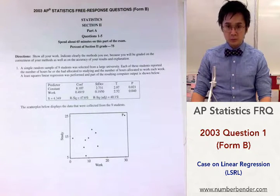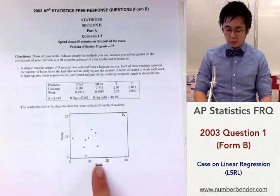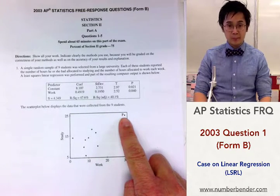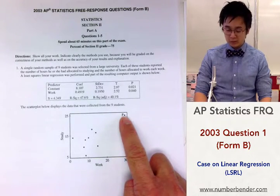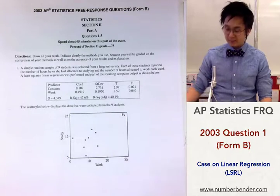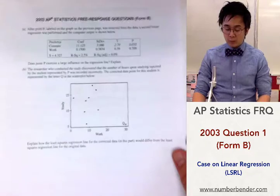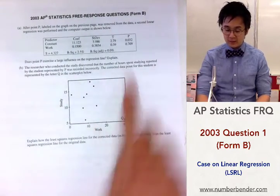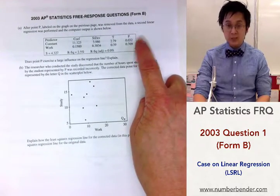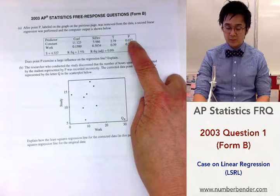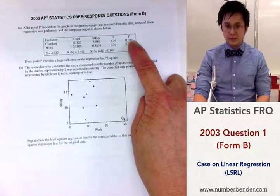So we are presented with two linear regression models. This one with the p-value right here, which is represented by this dot. And on the second linear regression model, we are presented this result. And this time, the p was taken out of the linear regression.